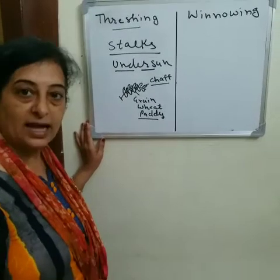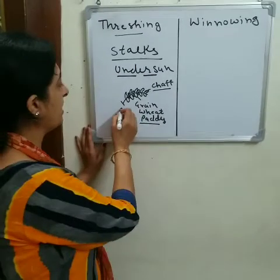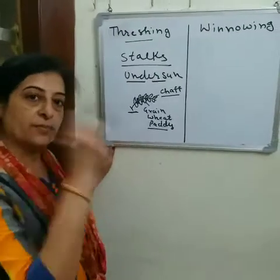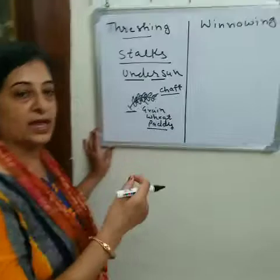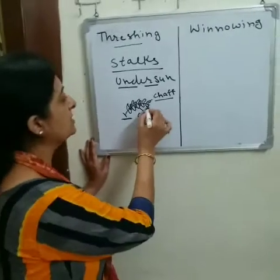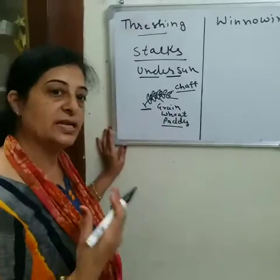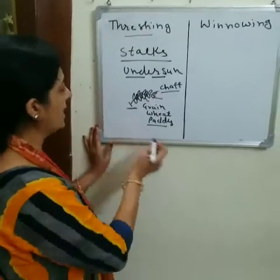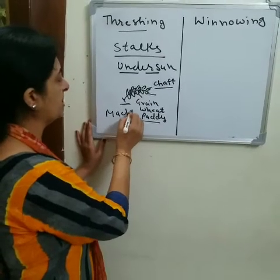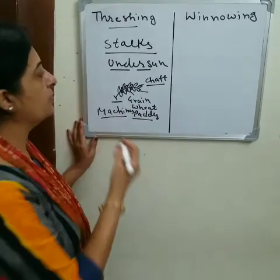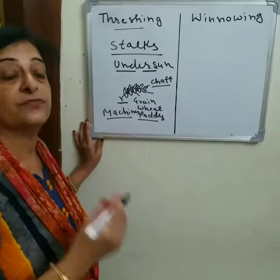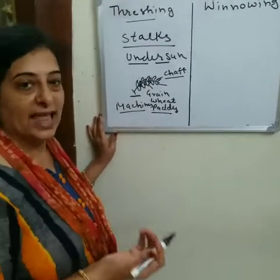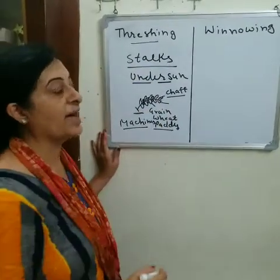Threshing is a process to separate the grain seeds — like wheat, paddy, or rice — from the stalk. Threshing can be done by hand: the stalks are beaten on a stone, and the seeds separate from the stalks. Threshing can also be done with the help of bullocks or machines. This method is mainly used by farmers.